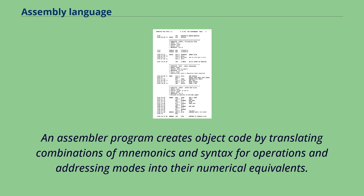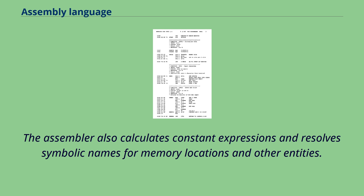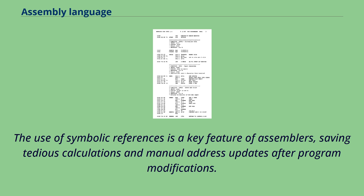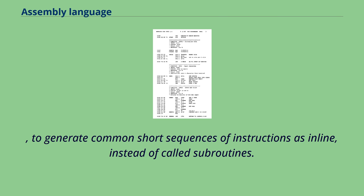An assembler program creates object code by translating combinations of mnemonics and syntax for operations and addressing modes into their numerical equivalents. This representation typically includes an operation code as well as other control bits and data. The assembler also calculates constant expressions and resolves symbolic names for memory locations and other entities. The use of symbolic references is a key feature of assemblers, saving tedious calculations and manual address updates after program modifications. Most assemblers also include macro facilities for performing textual substitution, to generate common short sequences of instructions as inline, instead of called subroutines.